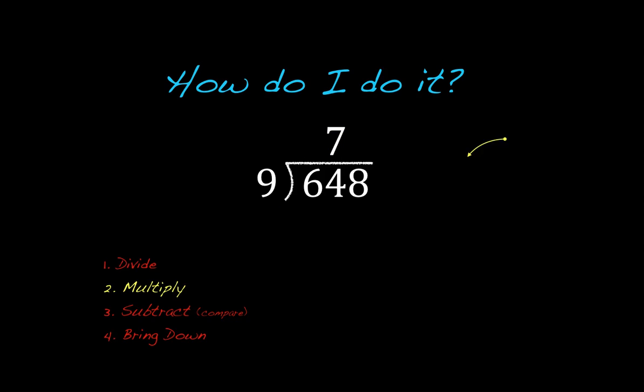As we'll see here in the next step, we're going to multiply. And we're going to say 7 times 9 is going to give us 63. And again, notice how, as I'm going here, I'm really lining up these numbers. So from here, then, I'm going to subtract. 64 minus 63 is going to give us 1.